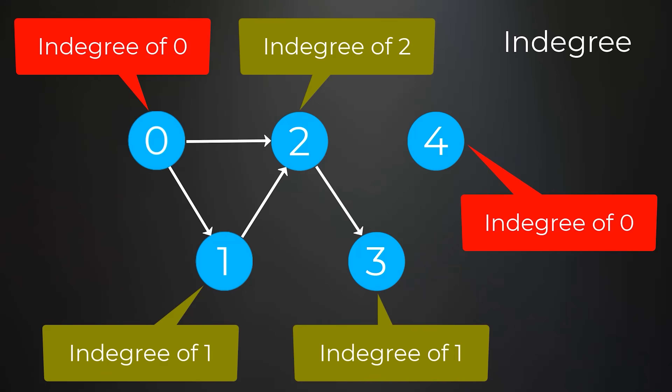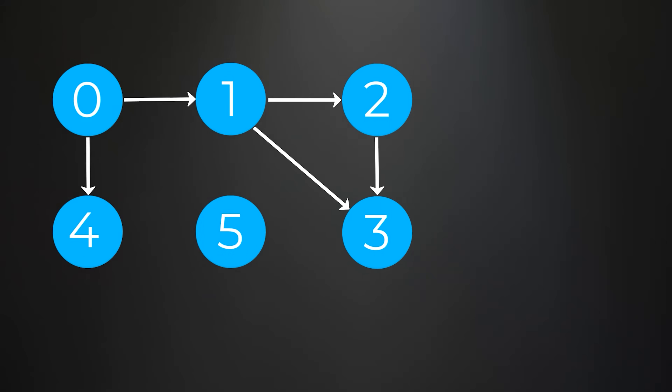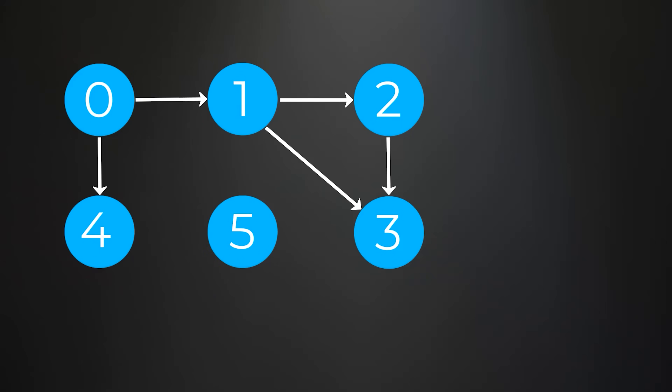If a node has an indegree of 0, that means it is not dependent on any other nodes in the graph. A node that is not dependent on any other nodes can immediately be considered as complete or done — it can be added to our topological ordering. Using these indegree counts, we can continuously process nodes with indegree counts of 0. So let's look at an example and use Kahn's algorithm to perform a topological sort.